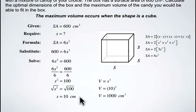When you have a side length of 10 centimeters, the volume of this cube then is going to be s times s times s or s cubed. We can substitute in our value of 10 cubed, which gives us a volume of 1000 centimeters cubed.